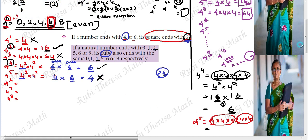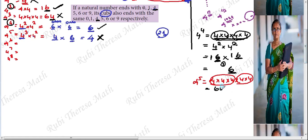To verify: 4 cube value is 64, ones place is 4. 4 squared is 16, ones place is 6. So square ends with 6, cube ends with 4. 4 times 6 is 24, ones place is 4 — so that is not included.